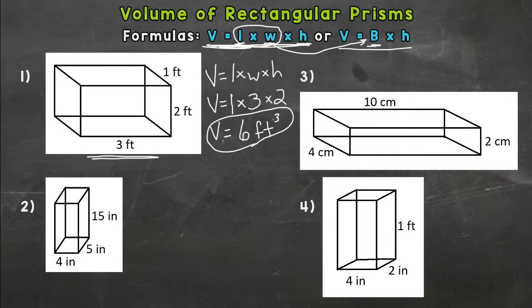Okay, six cubic feet. That's how many cubic feet it would take to fill that rectangular prism. Or you could say six feet cubed. Either one.